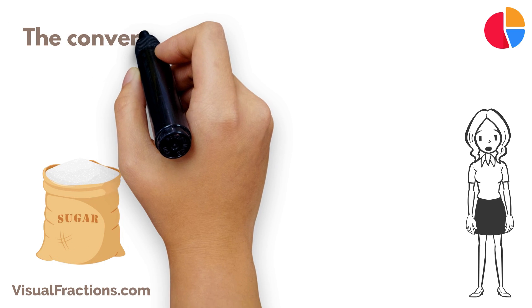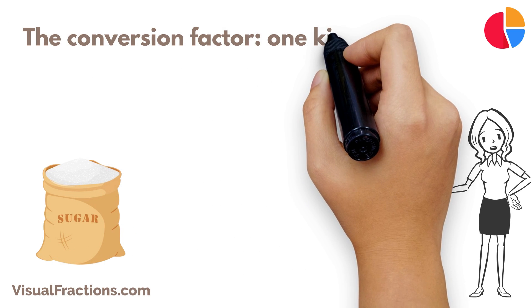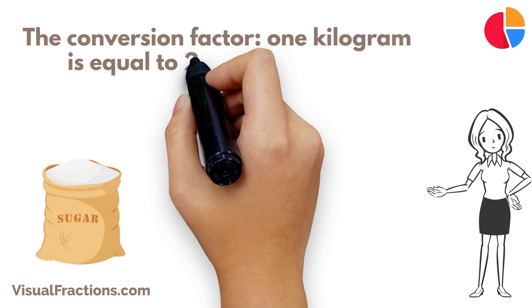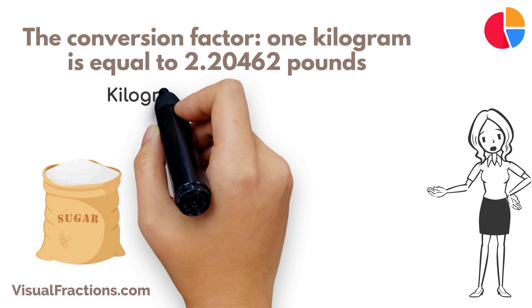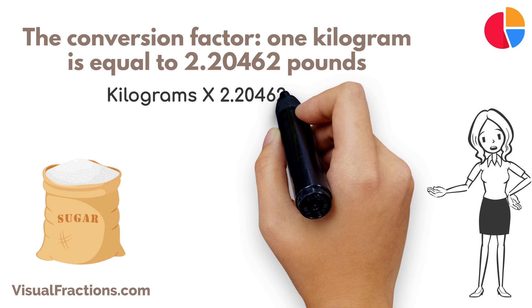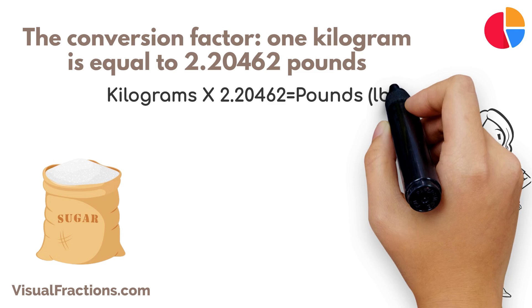First, let's review the conversion factor. One kilogram is equal to 2.20462 pounds. To convert kilograms to pounds, all you need to do is multiply the number of kilograms by the conversion factor.